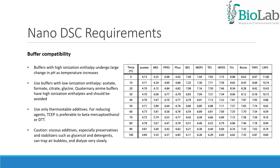Regarding buffer compatibility, buffers with high ionization enthalpy undergo large changes in pH as temperature increases. You should use buffers with low ionization enthalpy such as acetate, formate, citrate or glycine. Quaternary amine buffers have high ionization enthalpies and should also be avoided. You should use only thermostable additives. For reducing agents, TCEP is preferable to beta-mercaptoethanol or DTT. Have caution with viscous additives, especially preservatives and stabilizers such as glycerol and detergents, because they can trap air bubbles and dialyze very slowly and interfere with the DSC scan.